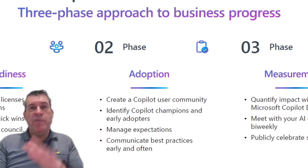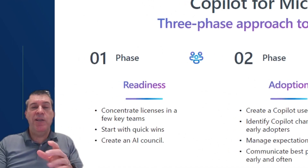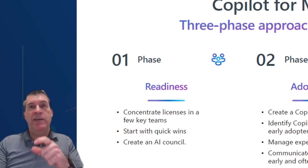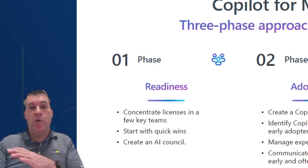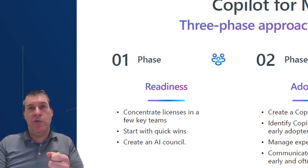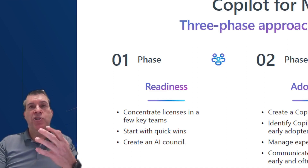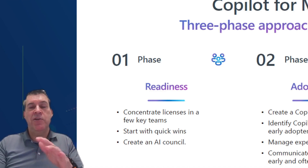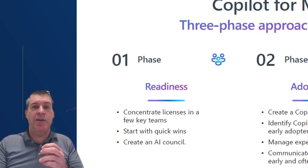Now with measurement and adoption in place, we can start to roll it out. Microsoft says — and I totally agree — concentrate your licenses in a few key teams. Figure out your most measurable use cases and start there with just those individuals. Don't buy Copilot for everybody, just for those groups. Measure their wins, communicate their wins, and then turn that team into your champions — have them share with the rest of the company the things they did to become successful with Copilot. That's how you get your value out of Copilot, but don't do any of it until you get your table stakes in order.